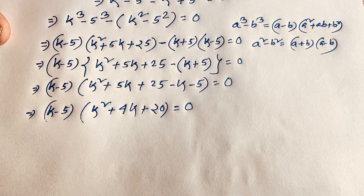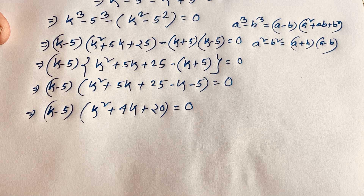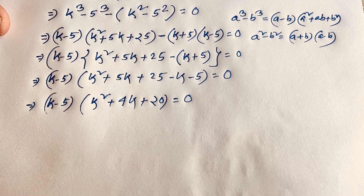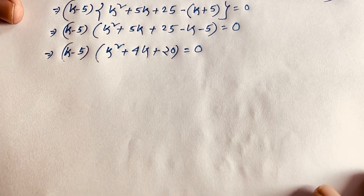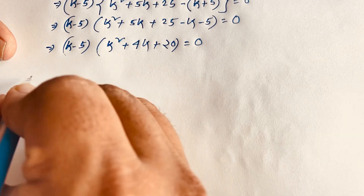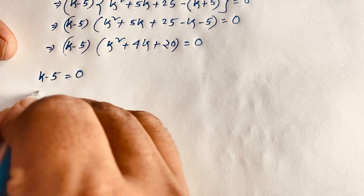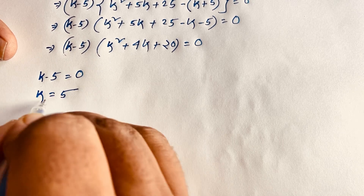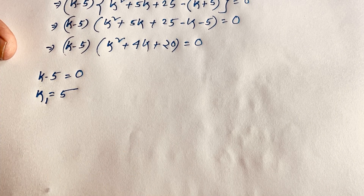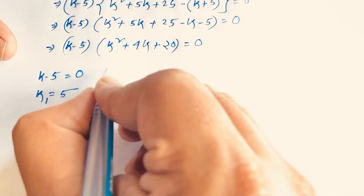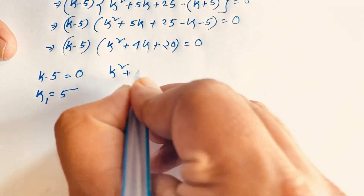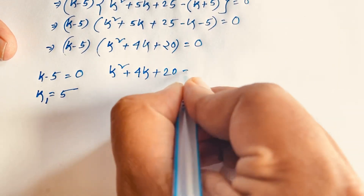We now have two cases. First case: k - 5 = 0, giving k₁ = 5. Second case: k² + 4k + 20 = 0. We need to find the remaining solutions from this quadratic.